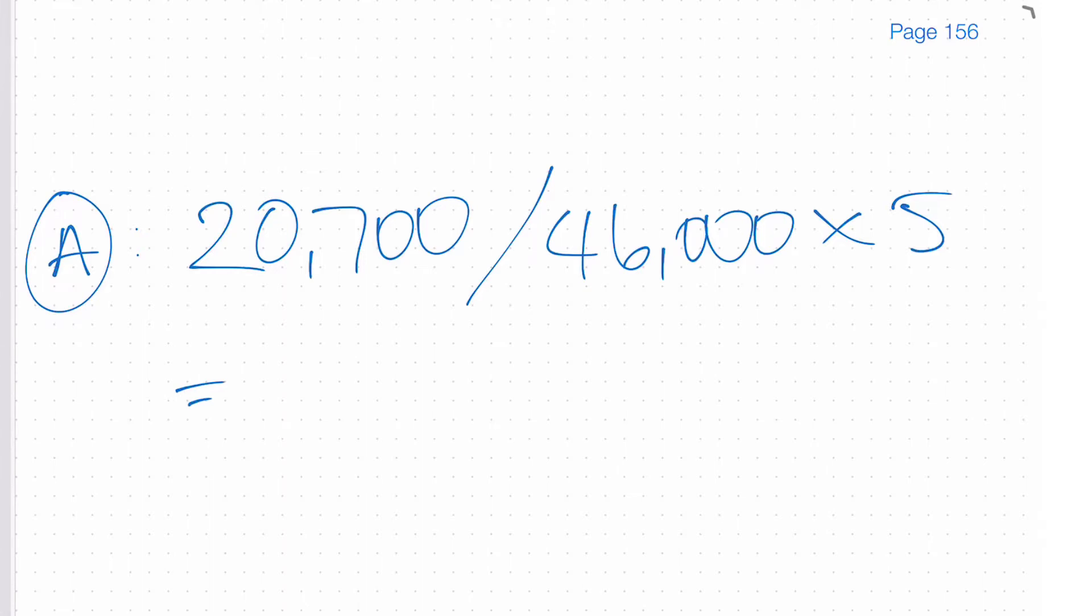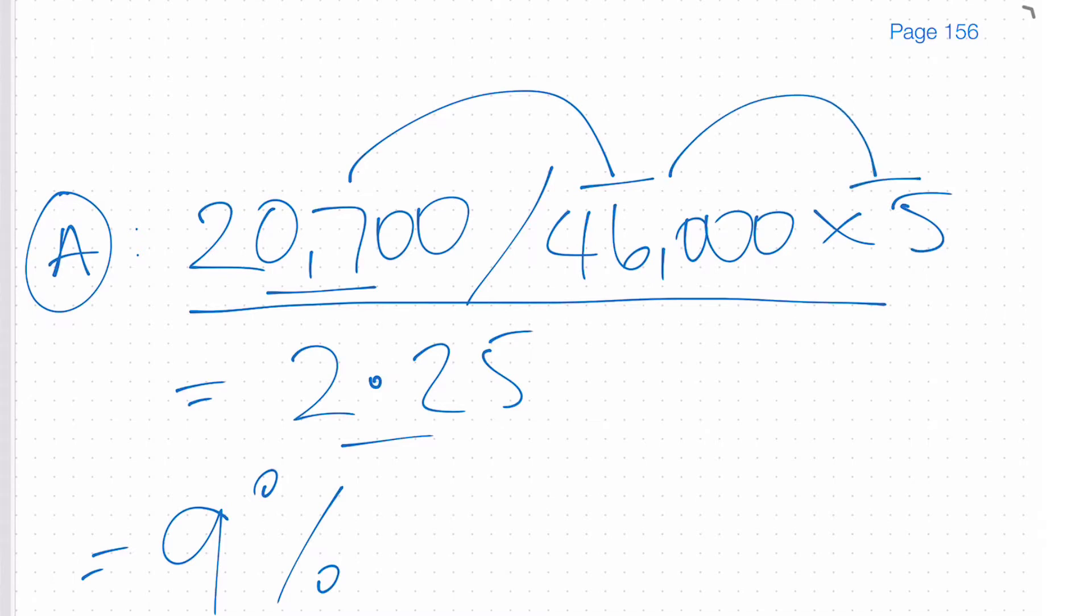Now some members were getting this answer, they were getting an answer of 2.25. Oh Russ in the answer it says that 9% is correct, I just don't understand, I'm getting 2.25. Now if you're getting 2.25, I'd suggest that you didn't do the correct calculation. And in fact what you've done when you've seen the report is to look at that and say, oh well let me follow that calculation. And people have literally done 20,700 divided by 46,000 times 5. If you did that you would get this number of 2.25 but of course that's not the calculation that should be done.